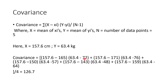The next value uses x₂ which is 171 and y₂ which is 76 — so again (x̄ minus x₂) times (ȳ minus y₂). You keep doing this for all five sets of values, then divide by four, since n minus 1 is five minus 1 equals 4. When you calculate this entire expression you get 126.7 as the covariance between x and y.